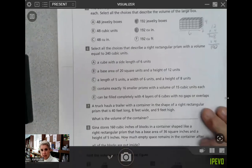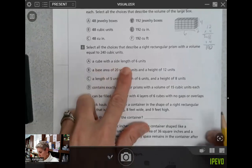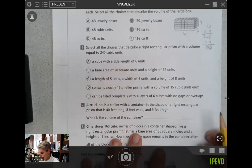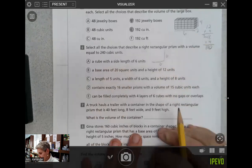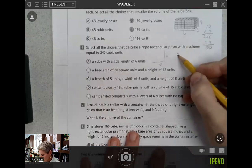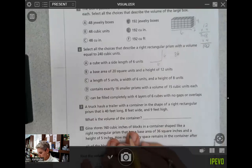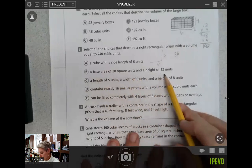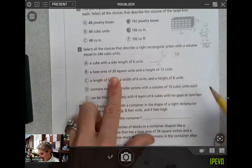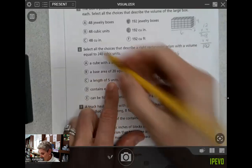Number six, select all the choices that describe a right rectangular prism with a volume equal to 240 cubic units. A cube with side lengths of six units. If I have a cube and its side lengths are six units, six times six, six times six is 36. I'm not sure I have enough information there to determine. Let's go to a base area of 20 square units and a height of 12 units. So if we know the base, that's the length and the width. 20 times 12, I'll hang that zero and I will get 240 with that one.